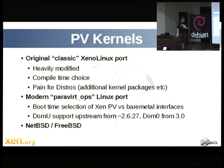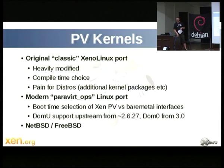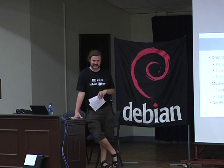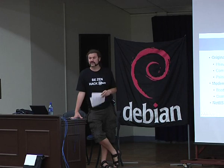For PV, you need to modify the guest kernel. Originally we had the classic Xenolinux port — a very heavily modified Linux kernel where you'd rip out the MM subsystem and replace it with hypercalls. But that gave you a compile-time choice for a kernel to either run on Xen or run on bare metal, which is fine, but for distros it's not great. You'd have to have two kernel packages, special flavors, extra QA, extra testing, and it's confusing for users.